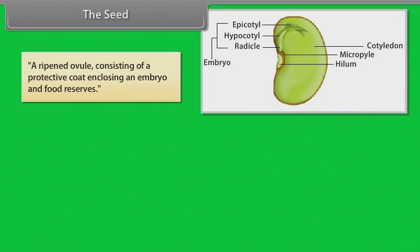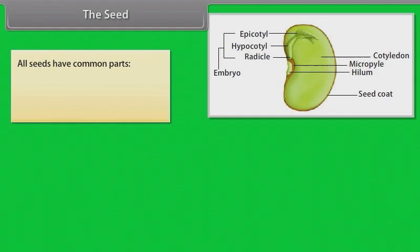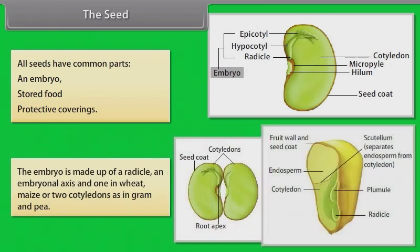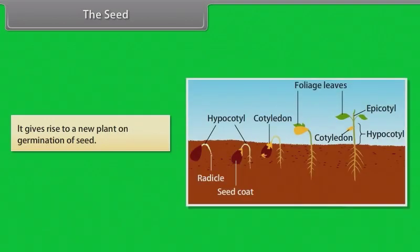A seed is a ripened ovule consisting of a protective coat enclosing an embryo and food reserves. It is a propagating organ formed in the sexual reproductive cycle of gymnosperms and angiosperms. All seeds have common parts: an embryo, stored food, and protective coverings. The embryo is made up of a radicle, an embryonal axis, and one cotyledon as in wheat and maize, or two cotyledons as in gram and pea. It gives rise to a new plant on germination of the seed.